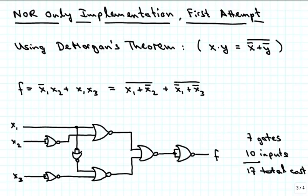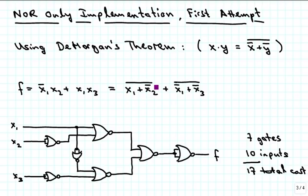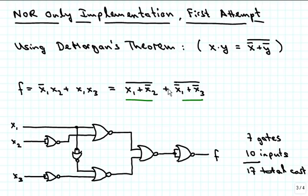Now suppose we only have NOR gates available. We can use De Morgan's theorem again: x AND y can be replaced by x_not OR y_not and then an overall inversion. So the term x1_not · x2 becomes (x1 OR x2_not) inverted, and similarly x1 · x3 becomes (x1_not OR x3_not) inverted. Each of these two terms fits the NOR gate well. However, we don't have an overall NOR gate — we have an OR gate — so we will need to implement that using an OR gate followed by an inverter.